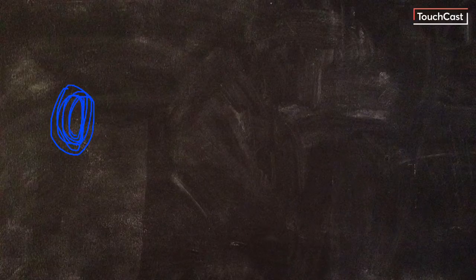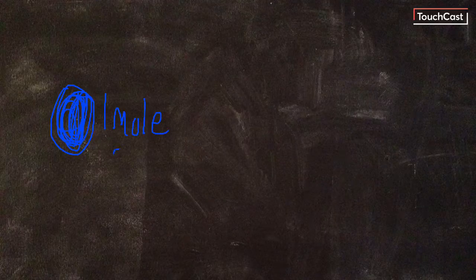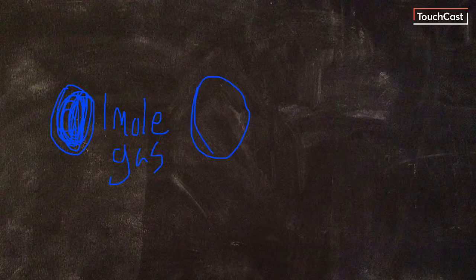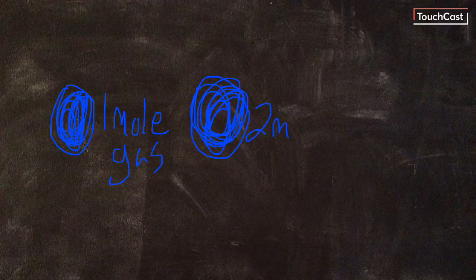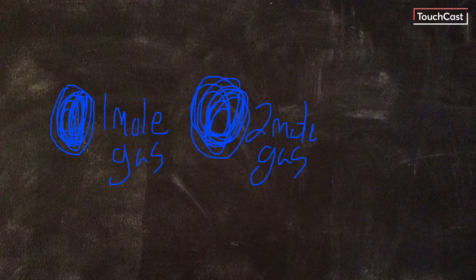So if I have one balloon here — and this is probably unreasonable — I have one mole of gas, let's say here. And then that balloon, I add twice as much gas, I'll have two moles of gas. Just like that, that's Avogadro's law.